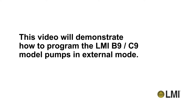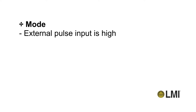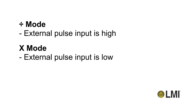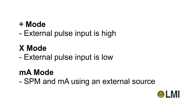External mode programming options include: Divide mode — use when the external pulse input is high; Multiply mode — use when the external pulse input is low; and Milliamps mode — to set the minimum and maximum strokes per minute and milliamps using an external source.